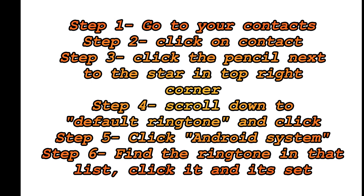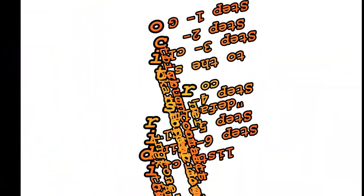Once you click Android system, whatever the name of that song is, you scroll down to the letter and you will see it in that list of ringtones. Remember, it's the only way it's going to register in that specific area. You go there, you click it, and that's it — that's how you do it. It's very easy, and you can do that with a bunch of people.